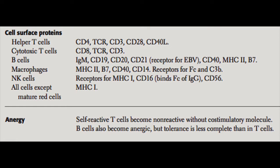Macrophages, being APCs, can express MHC class II as well as B7. They also express CD40, so they can interact with T cells through that interaction as well. They express CD14, which is a good surface and identity marker used to identify macrophages — remember, CD14 is specific for macrophages. They also have FC receptors so they can recognize antibodies that are opsonizing bacteria, and C3B receptors for the same reason, to identify when C3B is opsonizing a bacteria.